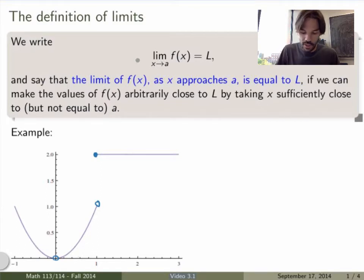We say that the limit of a function f as x approaches a is equal to a value L, if we can make the values of the function f arbitrarily close to L by taking x sufficiently close to (but not equal to) a. So the limit here is really about the behavior of the function f near x equals a, but not exactly at x equals a.